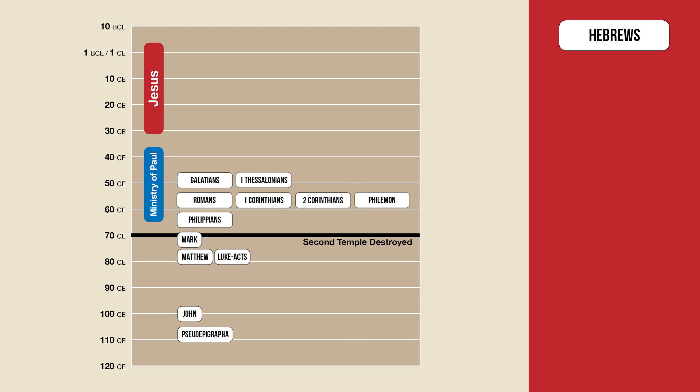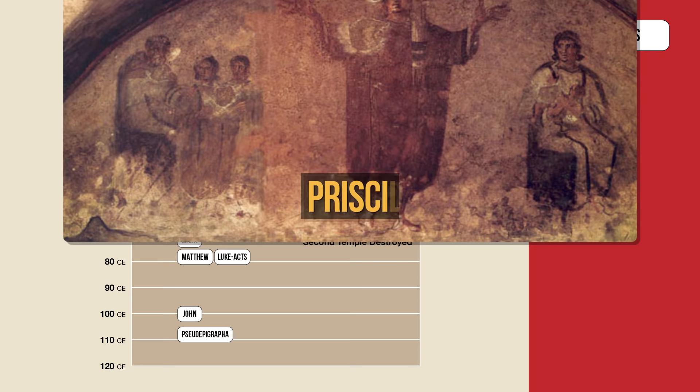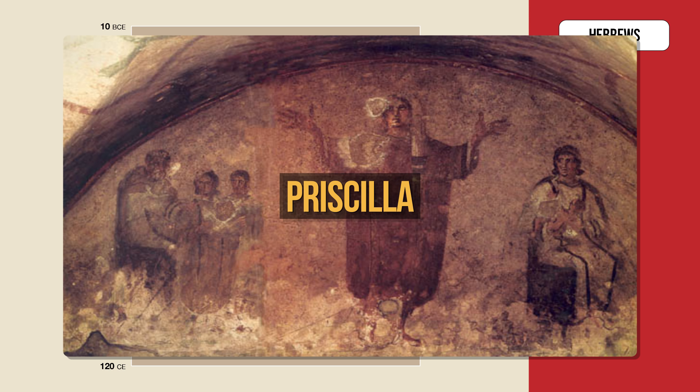Which brings us to Hebrews. Virtually no biblical scholar today attributes this one to Paul, even in the most conservative circles. In fact, this letter doesn't even begin with the usual "Paul" at the top. No sender is mentioned, nor any recipient, although at the end it says "those from Italy send their greetings." The book is called Hebrews because it is thought that it was sent to Jewish Christians in Jerusalem. So this is yet another book for the anonymous category. However, there have been numerous hypotheses put forward over the years as to who the author might be. One hypothesis that I find quite interesting is that it was written by a woman named Priscilla — if true, this would be very notable.